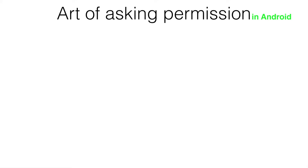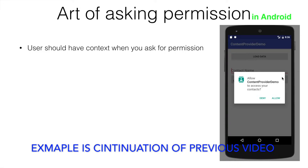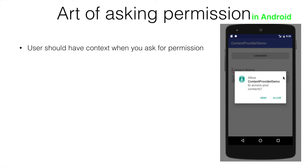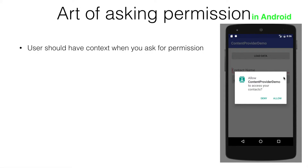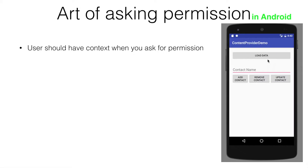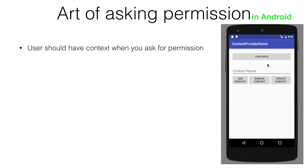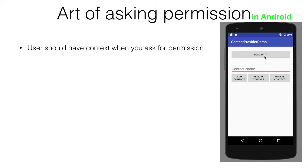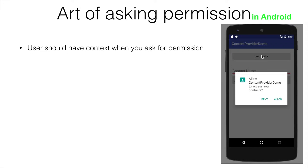Having understood this, how do you ask permissions in Android? Android sets certain ground rules and it is better to follow these whenever you are asking for permission. The user should have context when you ask for the permission. Whenever you launch the application, you don't suddenly ask for the permission. It is always better to ask for the permission when the user performs some kind of action, for example when the user clicks on 'load data'.